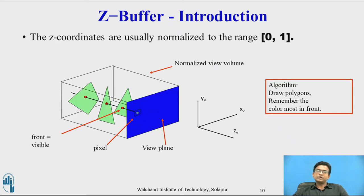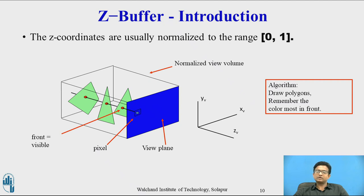When you want to map a window from world coordinate space to a viewport, you require normalization coordinates. The z-coordinates are usually normalized to the range 0 to 1, where a value of 0 for the z-coordinate indicates the back clipping plane and a value of 1 indicates the front clipping plane. In the diagram, you can see the back clipping plane and front clipping plane with the normalized coordinates.